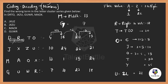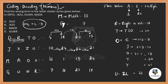Let's verify the other clusters follow the same logic. For J-X-Z-U: J=10, X=24, Z=26, U=21. 10 to 24 is +14, 24 to 26 is +2, 26 to 21 is −5. Correct. Now for M-A-O-X: M=13, A=1. 13+14=27. Since there are only 26 alphabets, 27−26=1, which is A again. So the pattern holds.